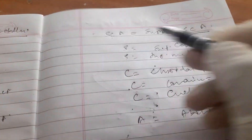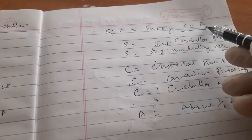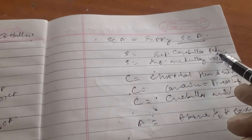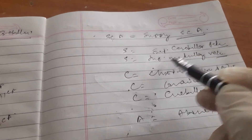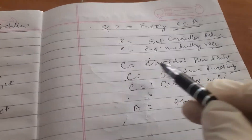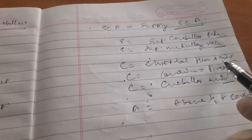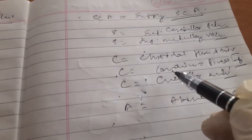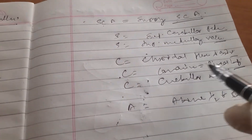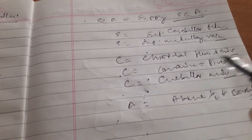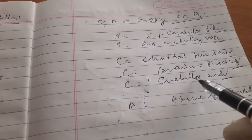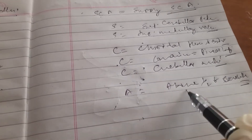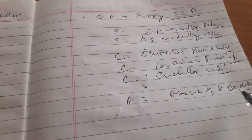So the superior cerebellar artery supplies: S for superior cerebellar peduncle, S for superior medullary velum, C for choroidal plexus of the third ventricle, C for conarium — that is the pineal body — C for cerebellar nuclei, and A for above half of the cerebellum.